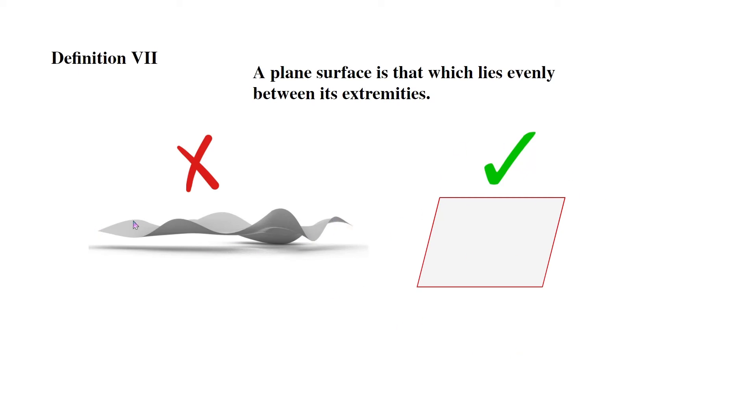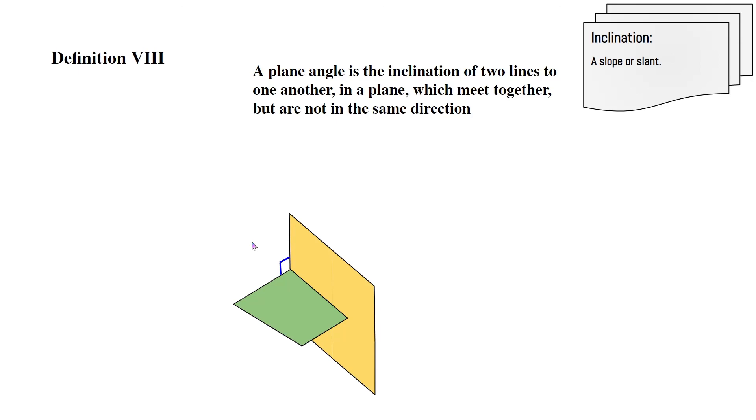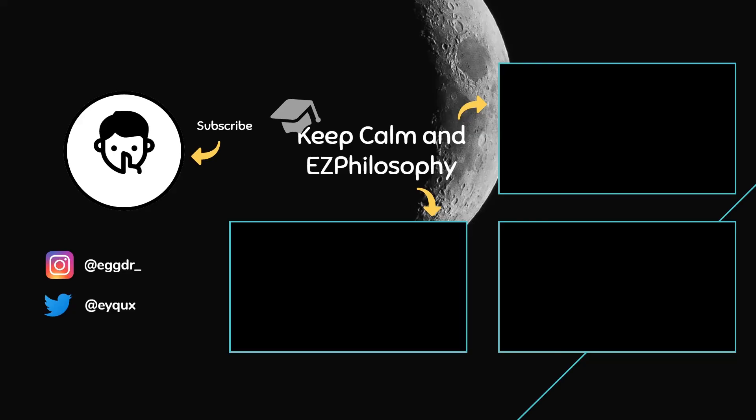Now Definition 8: A plane angle is an inclination of two lines to one another in a plane which meet together but are not in the same direction. Hey there great people, sorry to cut off the video right there, but I didn't want the videos to get too long because math can get a bit boring. So long story short, this series, the videos are going to be a bit shorter. So in part 2 we will be discussing definitions 8, 9, and 10. So stick around, part 2 should be coming out shortly. Bye guys, thank you.